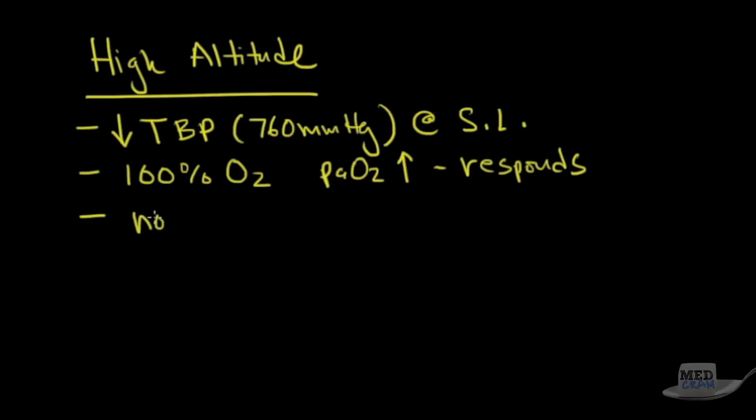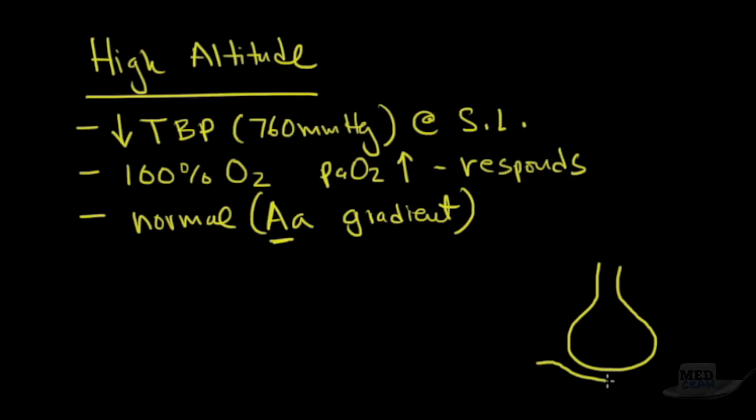The other thing that we see here is something called a normal AA gradient. So what is an AA gradient? Capital A stands for the alveolus. If you know what a cross-sectional area of an alveolus looks like and there's a capillary, the AA gradient - this is the capital A, and this is the lowercase a - it's simply talking about the difference in the O2 here in the alveolus versus here in the capillary.